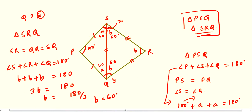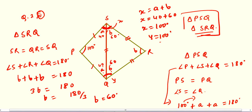Clear? Now this total angle is your X. So X equals A plus B. X equals 40 plus 60, so finally X equals 100 degrees. Similarly, this total angle is Y, and Y also equals A plus B, which is 40 plus 60. That means Y is also 100 degrees. So this is how you solve Question number 2, second.